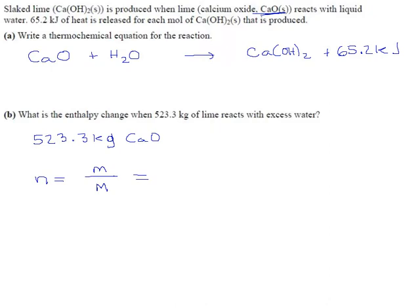Now, for mass, I'm not going to write 523.3. Do you see why not? Molar masses are in grams, this mass needs to be in grams also. So if you multiply that by a thousand, you get 523,300 grams of calcium oxide.